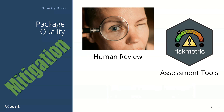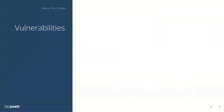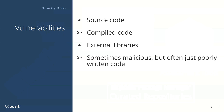Next, let's talk about what you typically think of when you say security — vulnerabilities. These can occur at any point in the package: from the source code, introduced in compiled code, or vulnerabilities that exist in external libraries used by the package. It's important to note that while these are sometimes malicious, most often they're just due to mistakes in poorly written code.